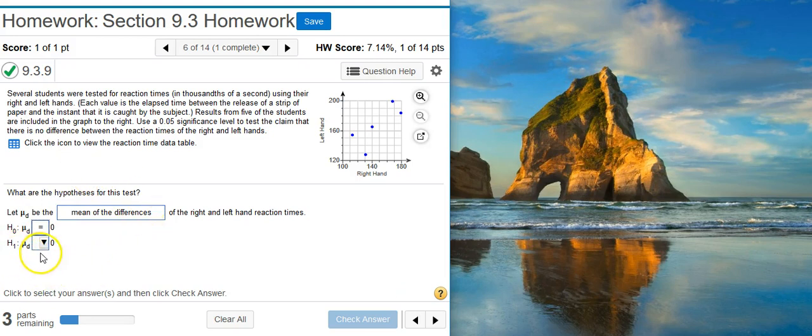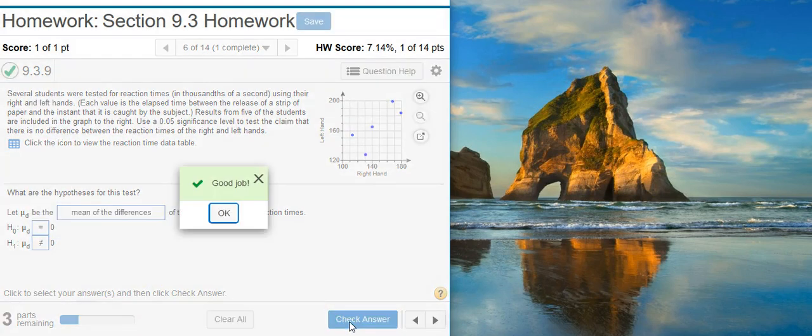And then, for the alternative hypothesis, we look to our claim. The claim that we're testing here, it says test the claim that there is no difference. In other words, that they're the same. Well, we can't really set this to be equal because equality, by definition, belongs to the null hypothesis. So, then we have to take the complement of that, and the complement of being equal to is being not equal to. So, now we checked our answer. Good job!